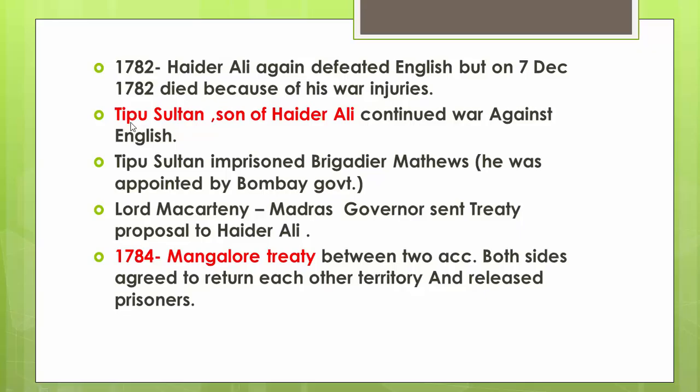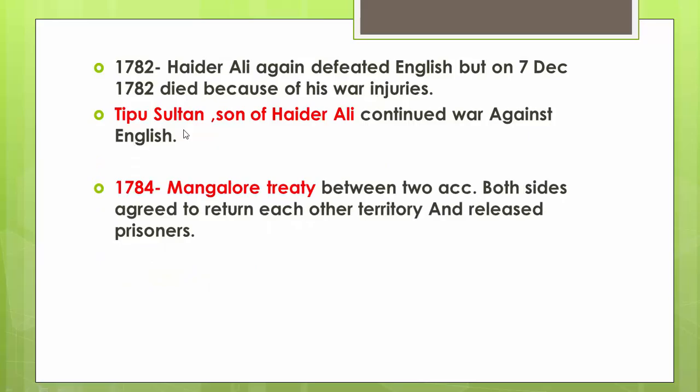Due to his war injuries, Haider Ali died in 1782. His son Tipu Sultan then took over control and continued the war against the English. Tipu Sultan was a sworn enemy of the English like his father, yet he was not as great a diplomat as Haider Ali.